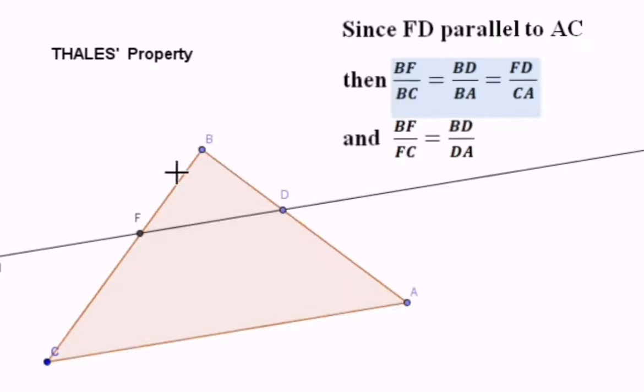So BFD is the reduction of BCA, while BCA is the enlargement of BFD. The first ratio says that BF over BC equals BD over BA equals FD over AC, where the numerators are the sides of a triangle and the denominators are also sides of another triangle. However, we have another ratio.